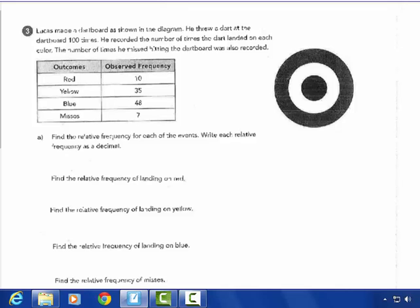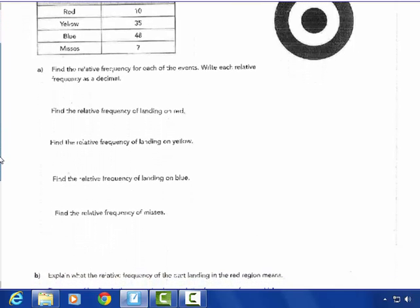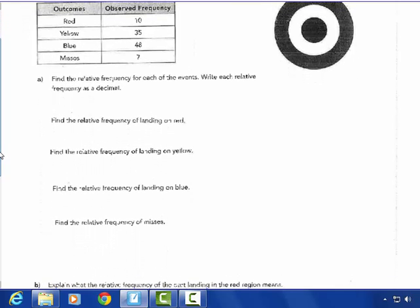Page 23. We're going to go over to page 23 with the dart board. Lucas made a dart board as shown in the diagram. He threw a dart at the dart board a hundred times. He recorded the number of times the dart landed on each color. The number of times he missed hitting the dart board was also recorded. So he's got seven misses. Find the relative frequency for each of the events. Write each relative frequency as a decimal.